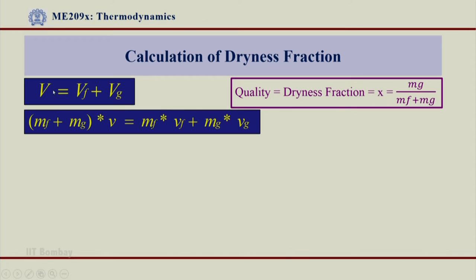If I write this total volume in terms of specific volume, I will have to multiply specific volume by total mass. So the total mass is Mf plus Mg — mass of liquid plus mass of vapor — into the specific volume of the two-phase mixture. This is equal to the total volume of saturated liquid, which is Mf times Vf, where Mf is the mass of saturated liquid and Vf is the specific volume of the saturated liquid, plus the mass of the vapor Mg multiplied by the specific volume of the vapor Vg. Both Vf and Vg are computed at the same pressure and temperature, and these values can directly be obtained from the steam tables.